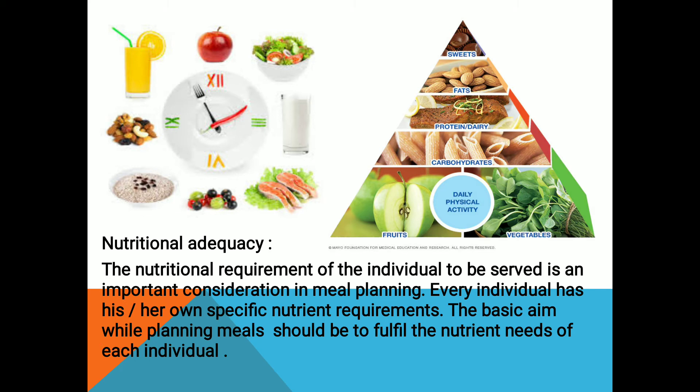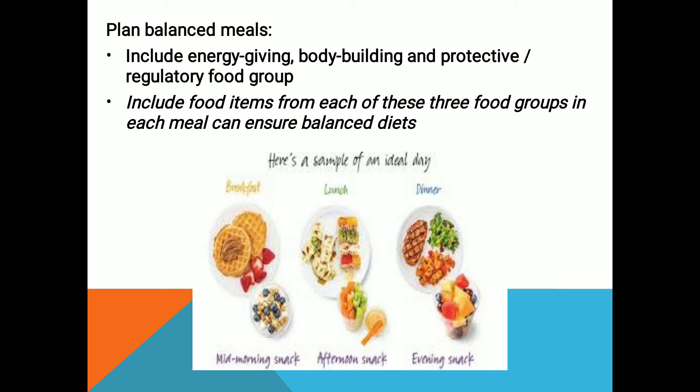Next factor is planning of balanced meals — santulit aahar pradaan karna. Santulit aahar yaani ki teeno bhojan samuho ko — jo urja pradaan karne wale bhojan, sharir ka nirman karne wale bhojan, evam surakshhatmak bhojanon ko include karna — inclusion of energy giving, body building and protective foods in the daily diet. Second part is to include the food items from all the basic food groups and to ensure that every meal is balanced. Jaise ki aap picture mein bhi dekh rahe hain ki breakfast, midday snack, lunch, afternoon snack, dinner aur evening snack mein vibhinn bhojan samuho se bhojan ko incorporate kiya gaya hai, so that the diet is properly balanced.